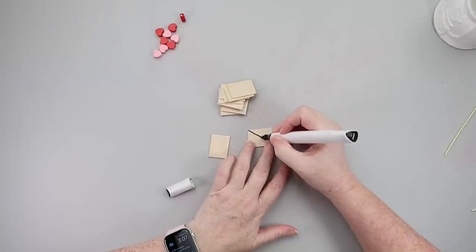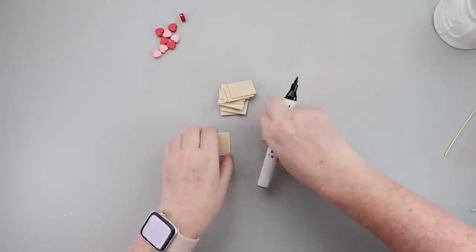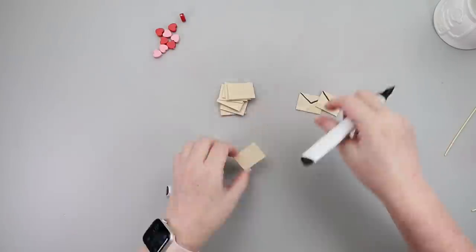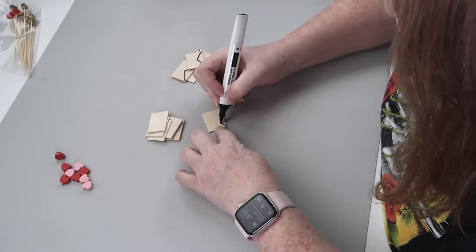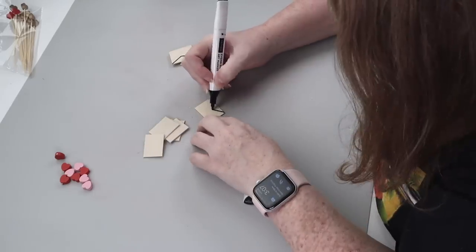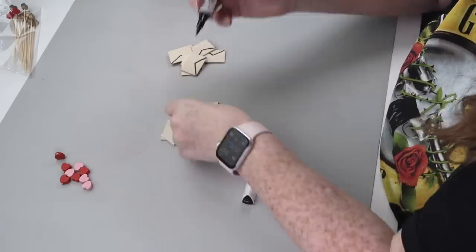Grab yourself a marker and we're turning these little rectangles into envelopes. I'm using these Arteza acrylic markers. I will link everything from today's video down below in the description box. So put a nice little triangle on each of these rectangles.